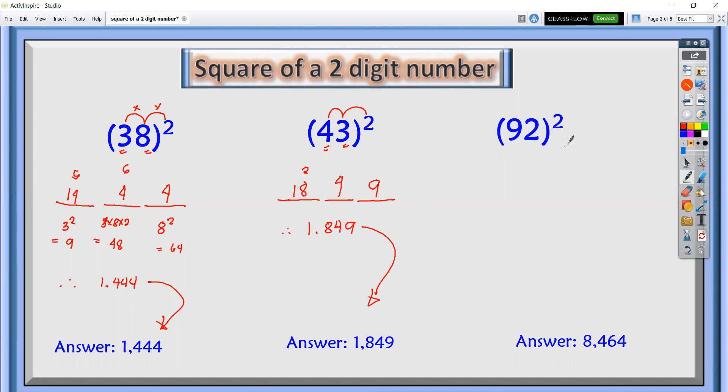Alright, next number, 92 quantity squared, three lines again. Square the last number, 2 squared or 2 times 2, it's 4. Multiply 9 times 2, it's 18, times 2, it's 36. Carry 3.